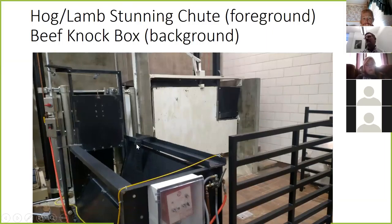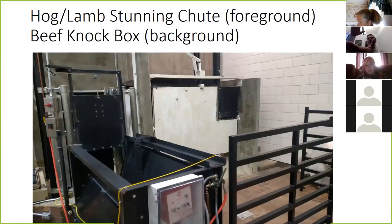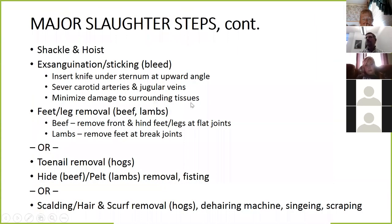Generally for hogs and often lambs we use an electrical stunner — essentially electrocuting the brain so they're insensitive to pain and unconscious. For beef in the meat lab, we use a captive bolt, where we push a metal rod or bolt into the brain of the animal. When done correctly, the animal drops like a ton of bricks and you know you've hit the brain. There are some indicators we have to check.